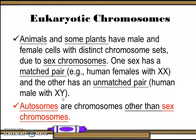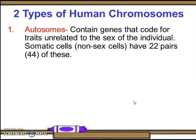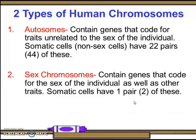Animals and some plants have male and female cells with distinct chromosome sets. Due to sex chromosomes, one sex has a matched pair — for example, human females with XX — and the other has an unmatched pair — human males with XY. Autosomes are chromosomes other than sex chromosomes. There are two types of human chromosomes: autosomes and sex chromosomes. Autosomes contain genes that code for traits unrelated to the sex of the individual. Somatic cells have 22 pairs, or 44, of these.